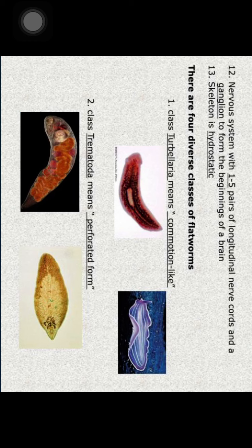The advancements include: definite bilateral symmetry; head with sense organs at the anterior end; triploblastic organization with mesoderm between ectoderm and endoderm; a gut wall distinct from the body wall; muscle layers in both body wall and gut wall; an organized excretory system; and a well-developed reproductive system with gonads, gonoducts, and copulatory organs.